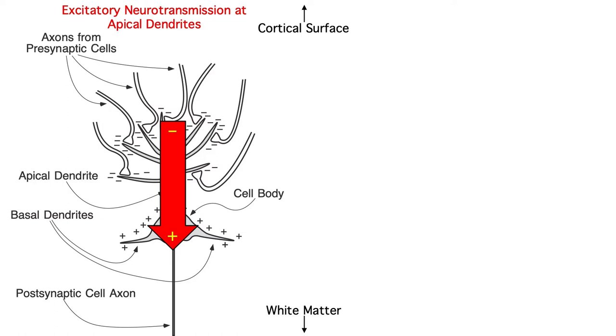By convention, dipoles are represented by arrows, with the arrowhead indicating the positive end. In this case, the negative end is toward the cortical surface, and the positive end is toward the white matter.